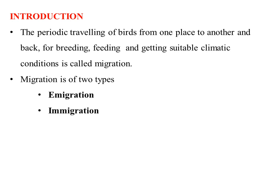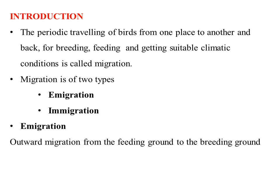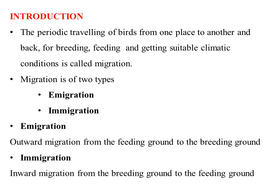Emigration means the outward migration or the outward movement from the feeding ground to the breeding ground. The outward movement of the birds from the feeding ground to the breeding ground is called emigration. Immigration is the inward migration from the breeding ground to the feeding ground — the birds returning from the breeding ground to the feeding ground is called immigration.